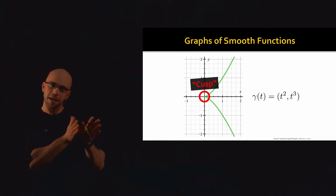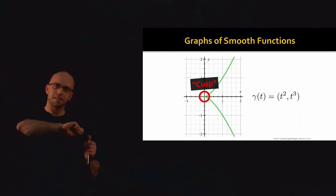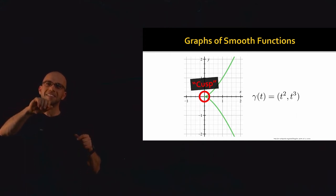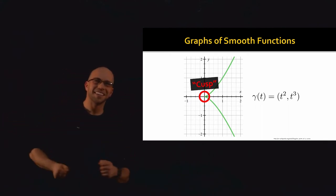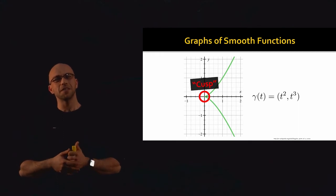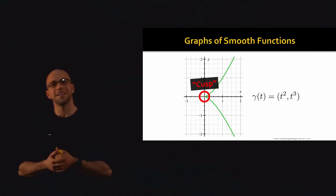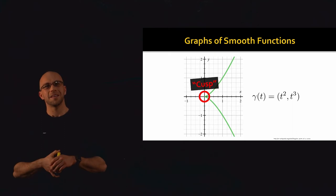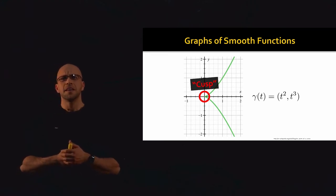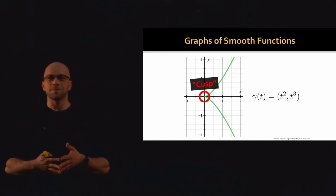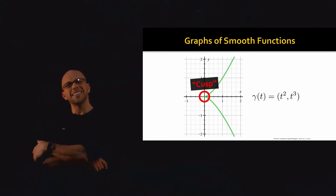If we think of t like time and gamma(t) like the position of a car, then at t = 0 the car comes to a stop for an infinitesimal tiny amount of time, turns the steering wheel a bunch, and then keeps driving off in some other direction. The people in the car don't experience crazy force because the car came to a gentle stop and continued off — that's why the function is smooth. But the car did have a sudden change of direction between positive and negative t values.